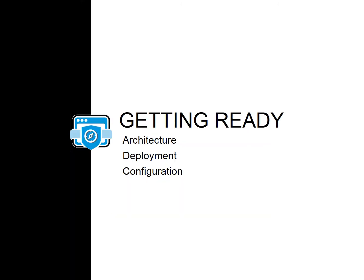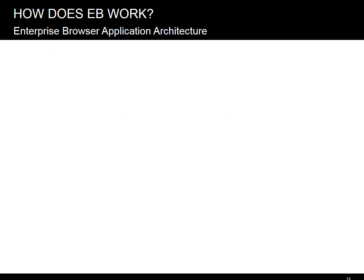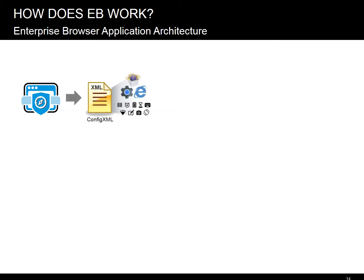Now let's talk about getting EB onto the device and how it works there, so we know what to expect. Here's what happens when you run an EB app. It's pretty simple. The EB is started, the config.xml file is read, and multiple settings are determined: indicators, full screen, features available, licenses, logging, etc., including rendering engine.